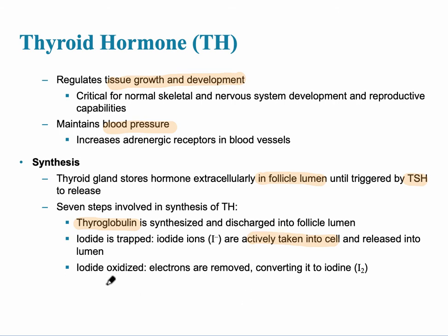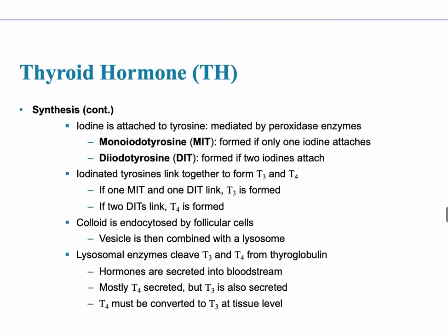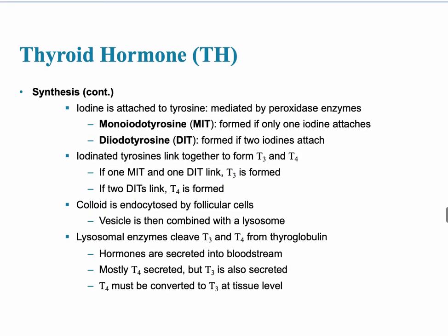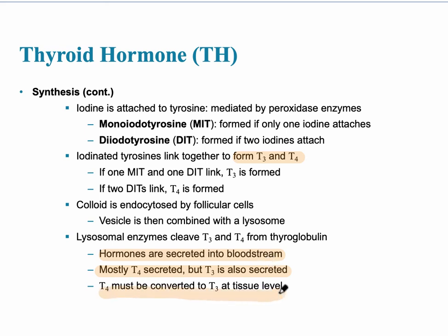The iodine is oxidized and attached to tyrosine, which links together to form T3 and T4. The hormones are then secreted into the bloodstream — mostly T4, but with some T3 as well. The T4 is then converted to T3 at the tissue level.